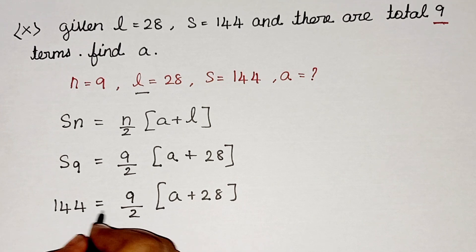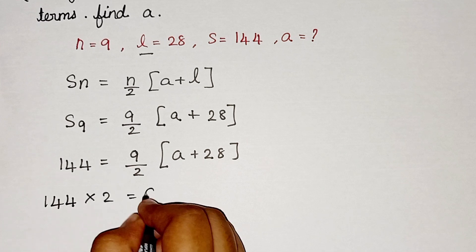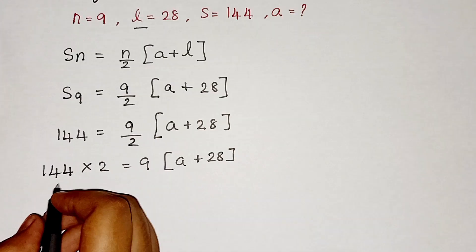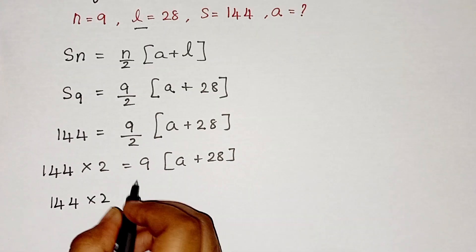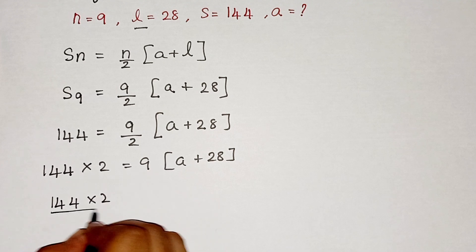So now we can get this 2 to this side, then it changes into multiplication and write the rest of the values as it is. So now we can write 144 × 2. So this 9 when we get it to this side, it changes into division.